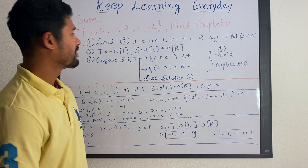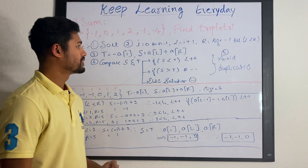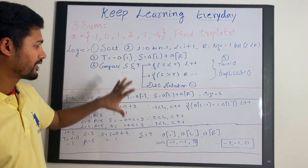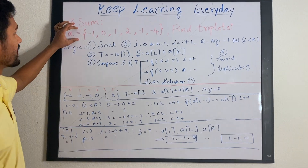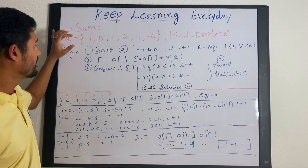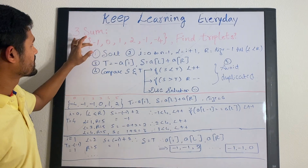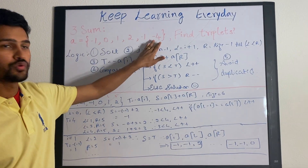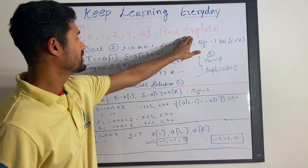Hi guys, today we'll be going over the problem Three Sum. First I'll explain the logic and then we can go over the example. The problem statement is: you will be given an array with elements like -1, 0, 1, 2, -1, and -4, and you have to find triplets such that the sum of three integers is equal to zero.